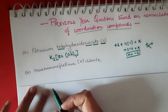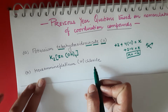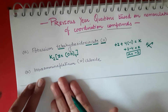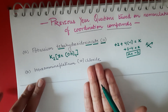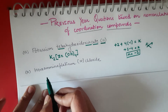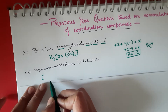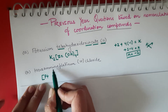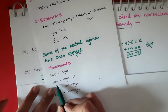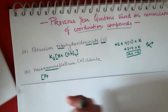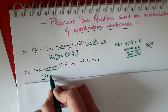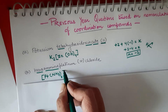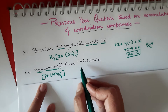Now let's go to the next one. Here it's written: hexaminplatinum(IV) chloride. Again we have to identify the cation and anion. The anion is chloride — it has Cl⁻ charge. The positive part is the coordination sphere. We write the square bracket: platinum is our central metal atom, so Pt. Amine is NH₃, so we write NH₃ — hexamine means 6, so [Pt(NH₃)₆].